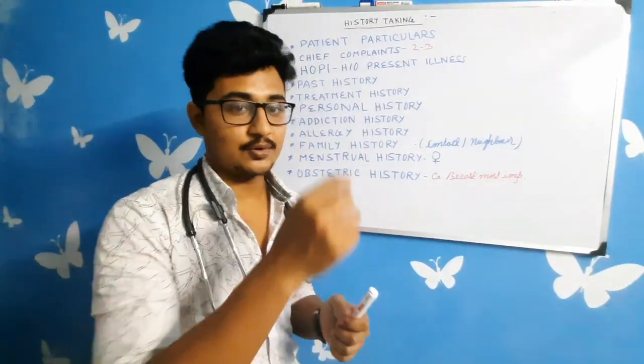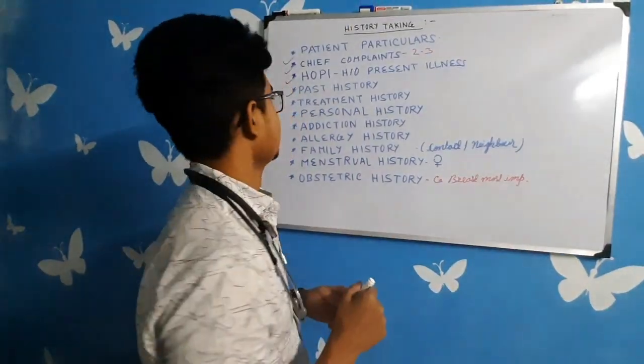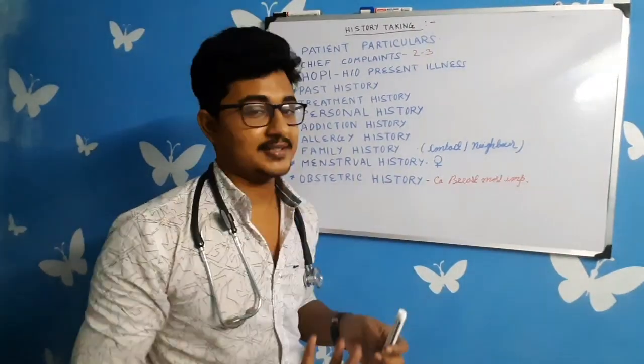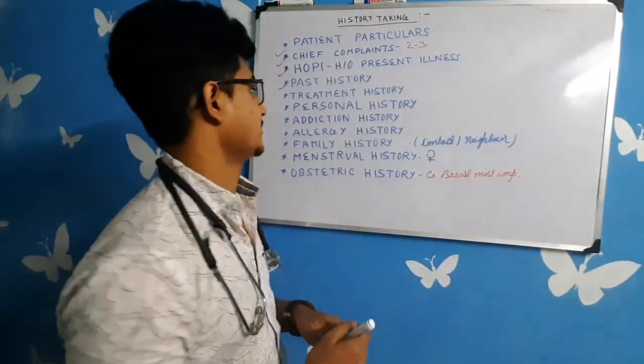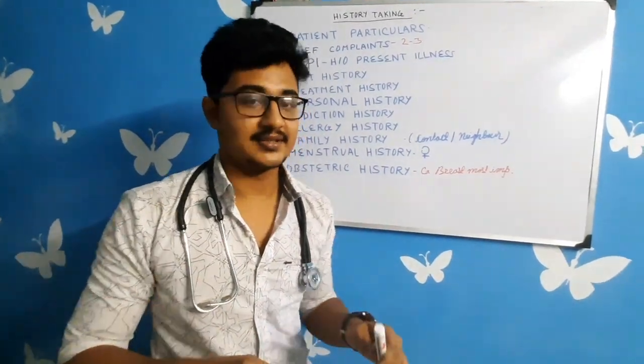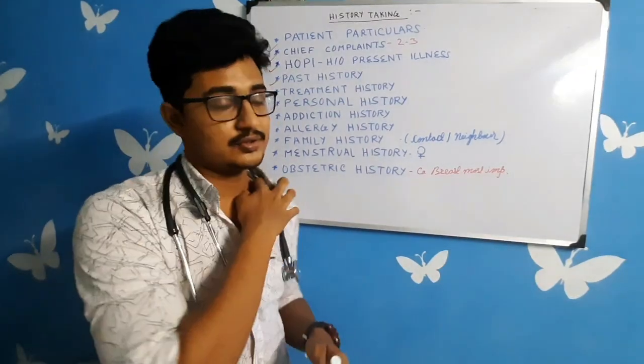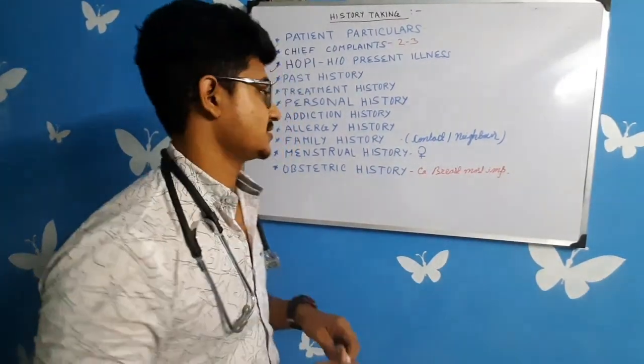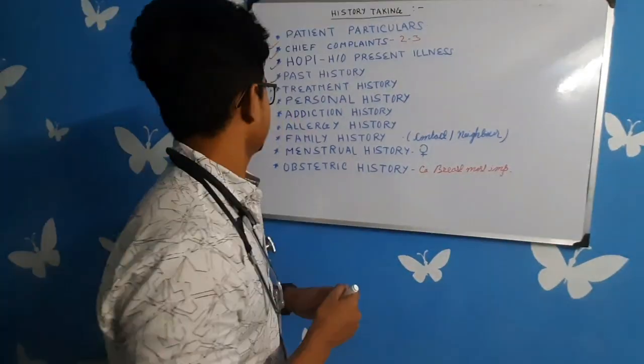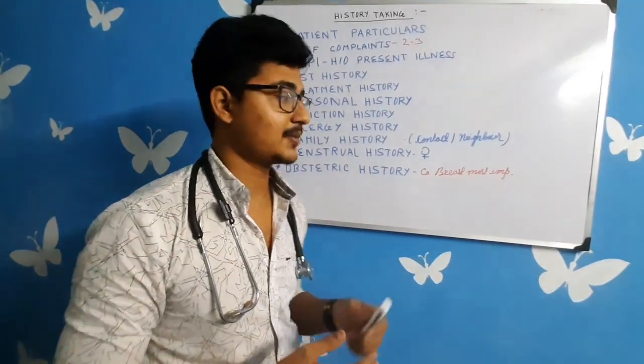Then is the history of present illness, where you elaborate the chief complaint and take the negative history so that other problems are ruled out and you are going towards the diagnosis. Then is the past history — past medical history, past surgical history, and past history of blood transfusion. Then is the treatment history — the treatment received in the hospital after admission, and drug history from the past. Then is the personal history — habits like bladder, bowel, sleep, appetite, and socioeconomic status. This is not applicable in pediatrics as habits are not found in children.